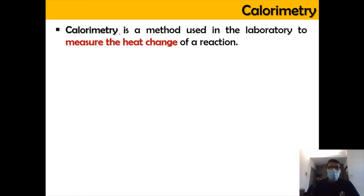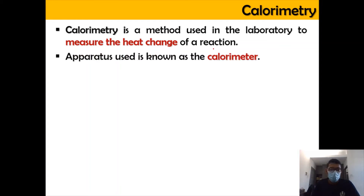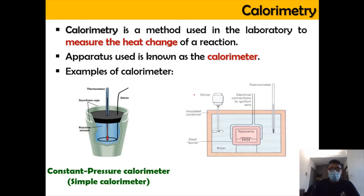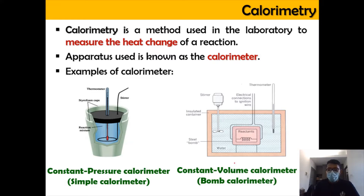Calorimetry is a method used in the laboratory to measure the heat change of a reaction. The apparatus used to measure the heat change is known as a calorimeter. There are two types: first, the constant pressure calorimeter or simple calorimeter, which is a very simple setup made up of styrofoam cups; and second, the constant volume calorimeter or bomb calorimeter, indicated by a steel bomb inside an insulated container.